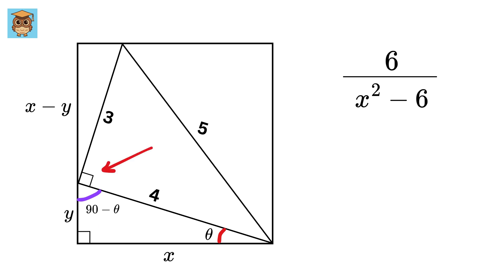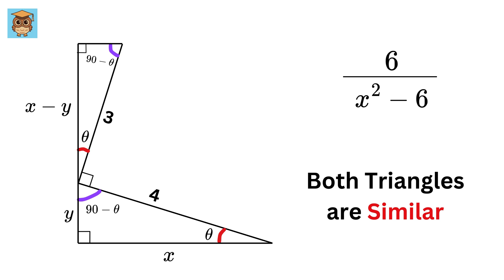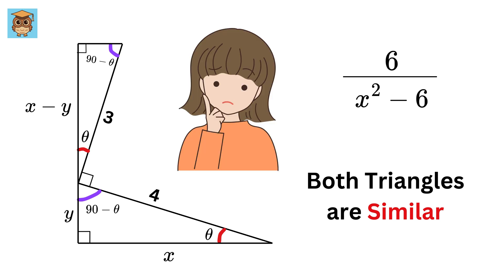Now, this angle is 90 degrees, and thus, this angle will also be equal to theta, right? And since this angle is also a right angle, so this will also be 90 minus theta. Therefore, both these triangles are similar to each other. That's nice, but how can we use this fact to find the value of X?